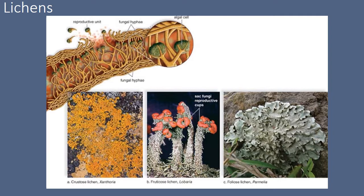There are three forms of lichens we'll see in lab and on the field trip. Crustose lichens form a crust over the material they encompass. Fruticose lichens have feathery fruiting bodies that stick up. Foliose lichens have a texture reminiscent of foliage or leaves — that's an easy way to remember the name.